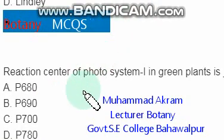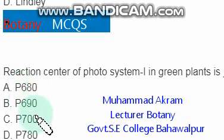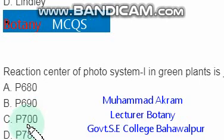The reaction center of photosystem one in green plants is P700.